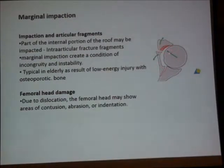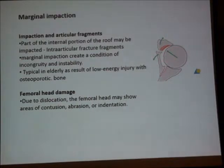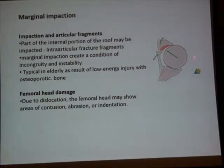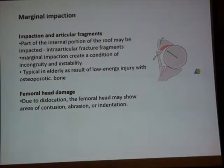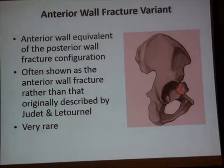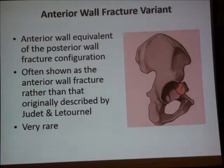Marginal impaction occurs usually in elderly patients with osteoporotic bone. We will have this type of injury where the quadrilateral plate displaces internally and the iliopectineal line displaces externally, so the femoral head comes in between and dislocates anteriorly. Another point to evaluate is the femoral head contusion, which will also determine the outcome. There may be a rare variant — an anterior wall equivalent to the posterior wall — with a small fragment; it is very rare.